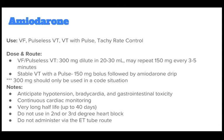Amiodarone should be used for VF, pulseless VT, VT with pulse, and tachyrate control. For VF and pulseless VT, the correct dose is 300 mg diluted in 20-30 mL, and you may repeat 150 mg every 3-5 minutes. For stable VT with a pulse, the correct dose is 150 mg bolus followed by an amiodarone drip. The 300 mg dose should only be used in a code situation.